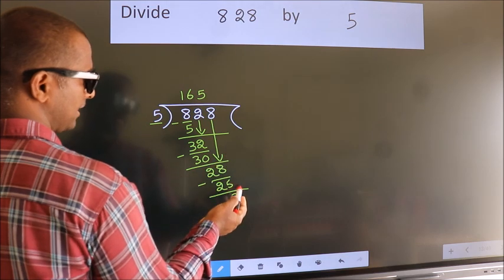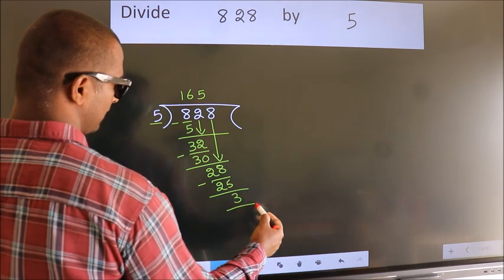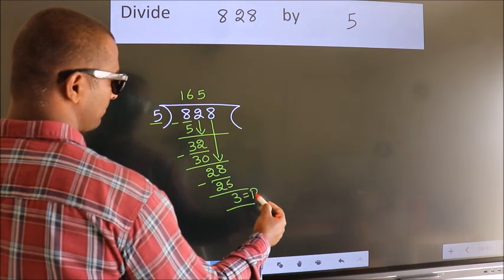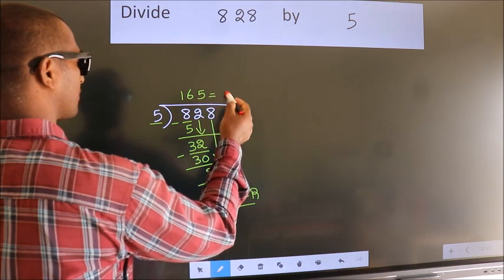No more numbers to bring it down. So, we stop here. This is our remainder. This is our quotient.